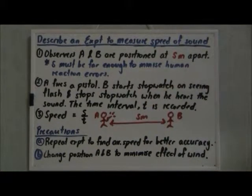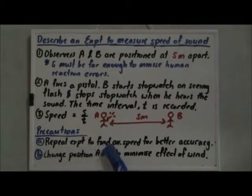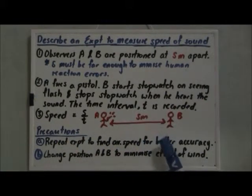And there are two precautions that we have to take note so as to make this experiment more accurate. The first one will be to repeat the experiment to find the average speed and this is for better accuracy.